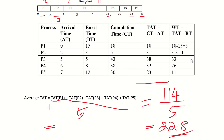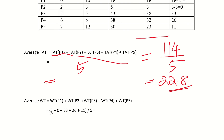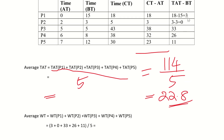Similarly, average waiting time: the waiting times are 3 plus 0 plus 33 plus 26 plus 11, which sums to 73. So 73 divided by 5 gives an average waiting time of 14.6.